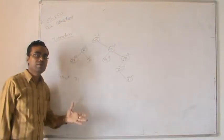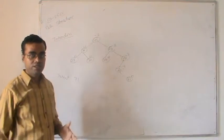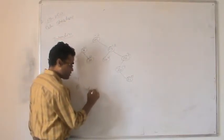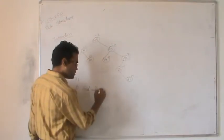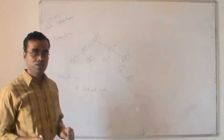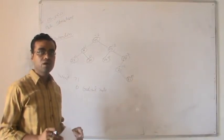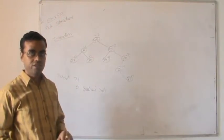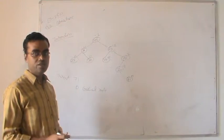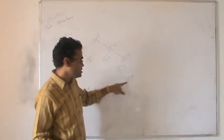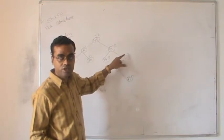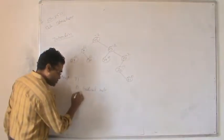When the tree becomes unbalanced, we need to perform rebalancing. First, we find the critical node — the nearest ancestor of the newly inserted node which has a balance factor other than minus one, zero, and one. In this case, the nearest ancestor with an invalid balance factor is 72. So 72 is the critical node. Then we perform rotation based on the position of the newly inserted node with respect to the critical node.